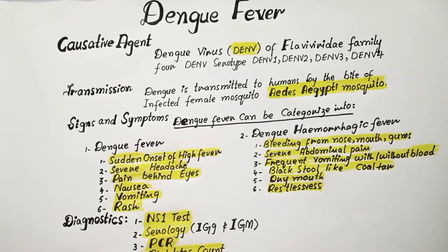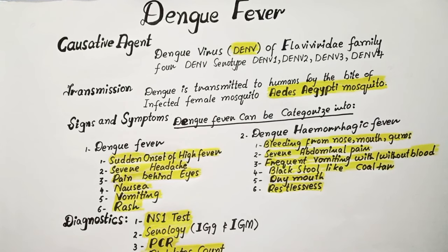Dengue fever can be prevented by eliminating places where mosquitoes can breed, including old tires, cans, and flower pots. Regularly change the water in outdoor bird baths. If someone in your home gets dengue fever, be especially vigilant to protect yourself and other family members, as mosquitoes that bite an infected person can spread the infection to others.